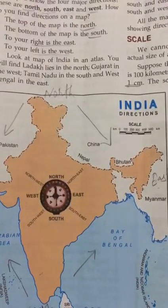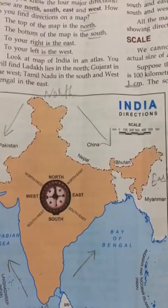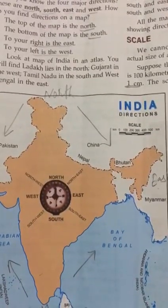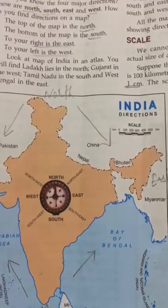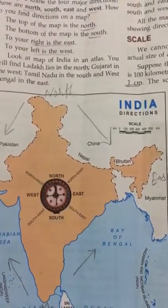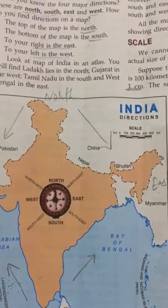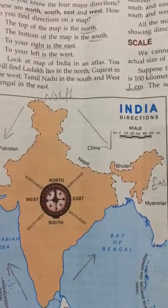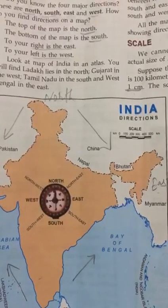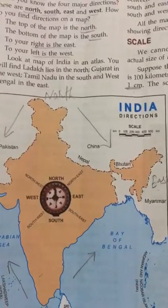Green is used for forest or plains areas. Brown is used for mountains and highlands. An important thing is that every country in the world uses the same set of symbols and colors. This is called conventional symbols.